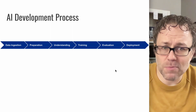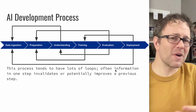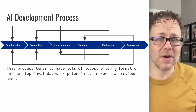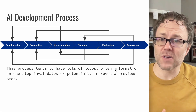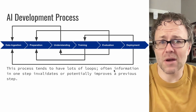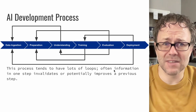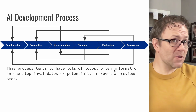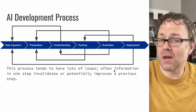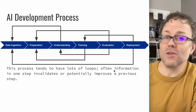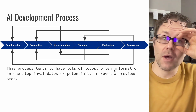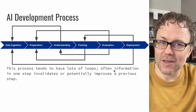Then you can think about how you're going to deploy that model and actually use it in production. But in reality this process has lots of loops. You might start off with data ingestion, get to preparation, understand the data, and then realize you have to modify it again. Maybe you get as far as training before realizing something has to change in data preparation, or as far as evaluation and find it works well in some circumstances but not others — possibly requiring multiple models or a classifier model to route predictions.